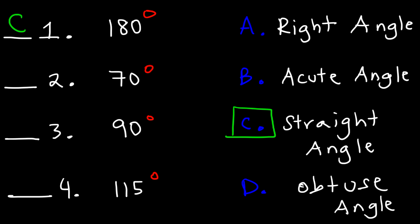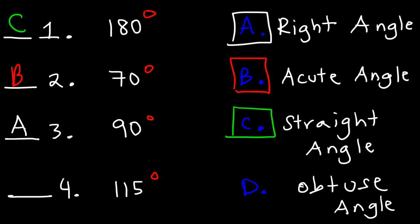Number two: an angle of 70 degrees corresponds to answer choice B — an acute angle, which is any angle less than 90. So 50, 70, 45 are all acute. Number three is exactly 90, which is a right angle — answer choice A. And number four, by default, is the obtuse angle. An obtuse angle is between 90 and 180, so 90.1 would be obtuse and 179 is also obtuse, and therefore 115 is obtuse as well.